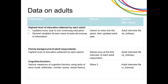We also collect the family background of adult respondents — specifically the highest level of education achieved by each parent of sample members. Even if someone is 60 years old in the panel, they will be asked about the qualification levels of their own parents. Additionally, at wave 3 we collected cognitive function through various measures using tests of word recall, arithmetic, number series and verbal fluency — quite refined measures of cognitive function.